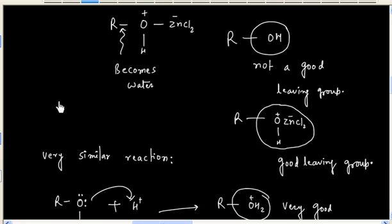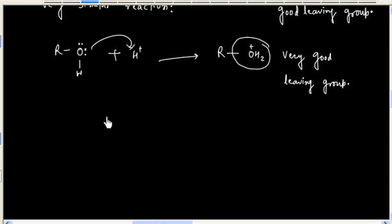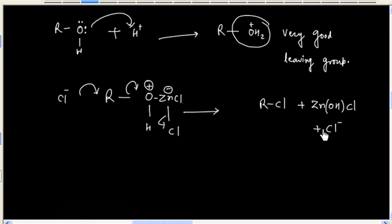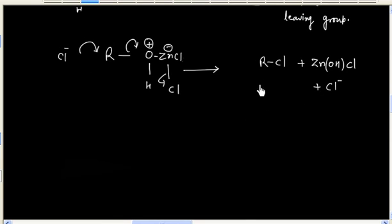In the next step, Cl- acts as a nucleophile and it attacks on carbon and leaving group departs the molecule. We have alkyl halide. Once Cl departs from zinc, we have alkyl halide and this alkyl halide forms turbidity in the solution.